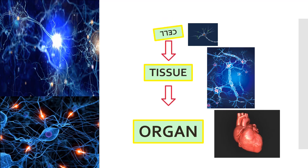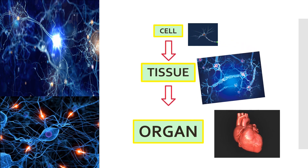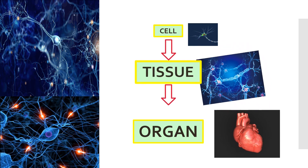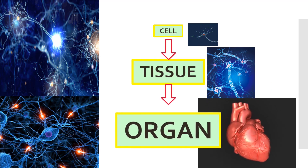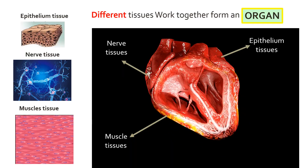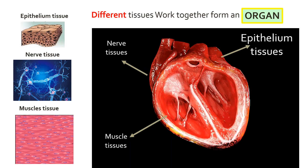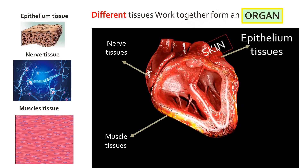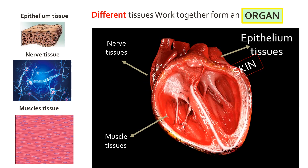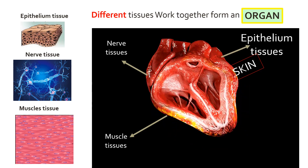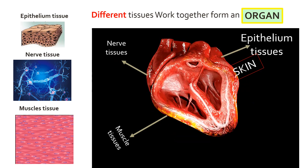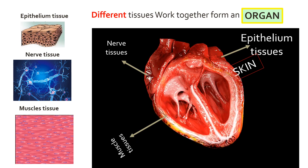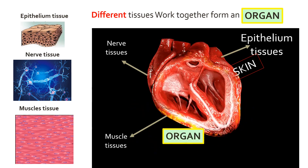We have learned how cells form a tissue. Now we learn how a tissue forms an organ. Epithelium tissue wraps around the heart as a skin, joining together with nerve tissue and muscle tissue to form an organ.